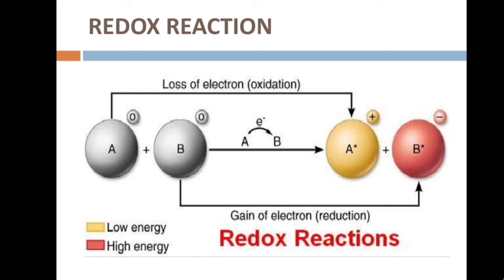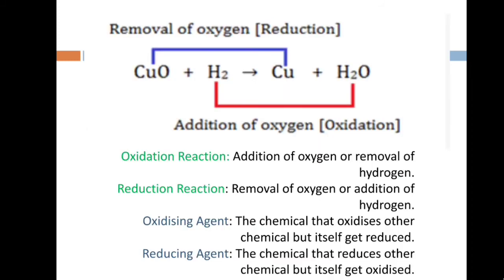Reduction is the removal of oxygen, addition of hydrogen, or the gain of electrons. To understand this reaction properly, let us see this reaction. Here copper oxide reacts with hydrogen to form copper and water. The site of oxidation is the hydrogen and the site of reduction is the copper oxide. In copper oxide there is the removal of oxygen, and in hydrogen there is the addition of oxygen.